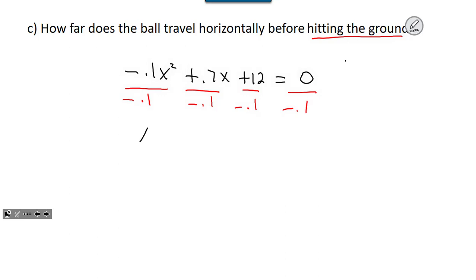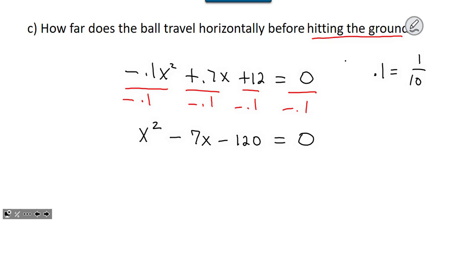Doing that, negative 0.1x squared divided by negative 0.1 becomes x squared; 0.7 divided by negative 0.1 gives negative 7x; and 12 divided by negative 0.1 gives negative 120. So we get x squared minus 7x minus 120 equals zero. Dividing by negative 0.1 is the same as multiplying by 10, which clears the decimals — the negative just made the leading term positive and nicer to look at.